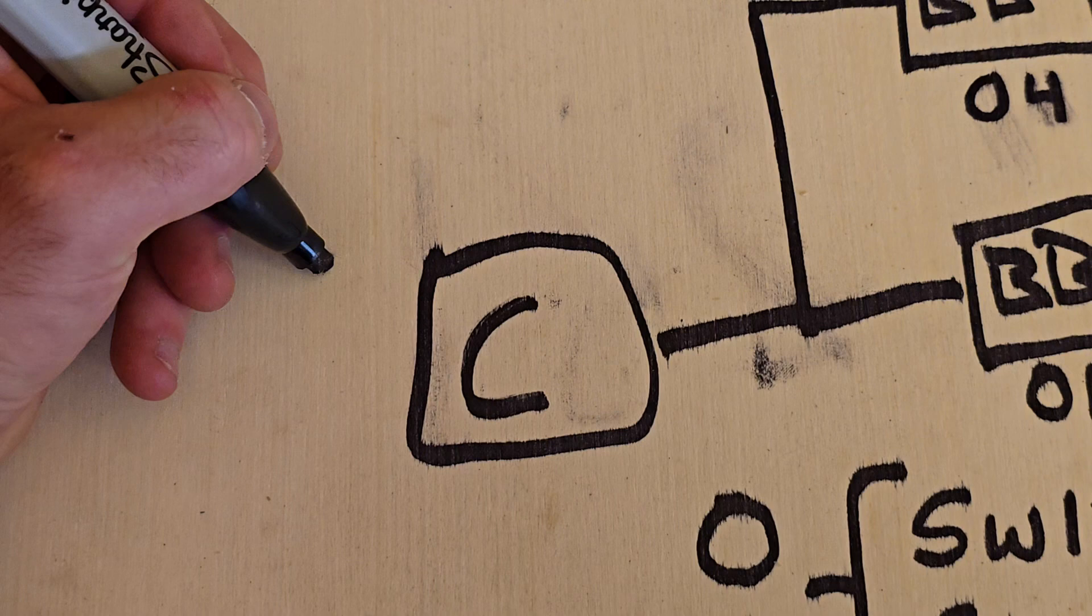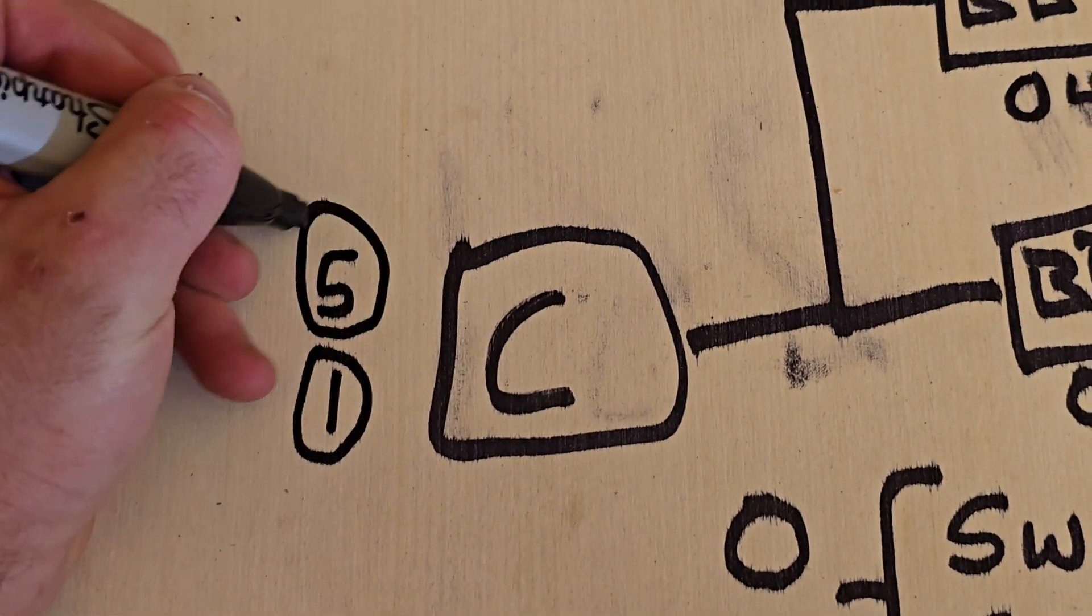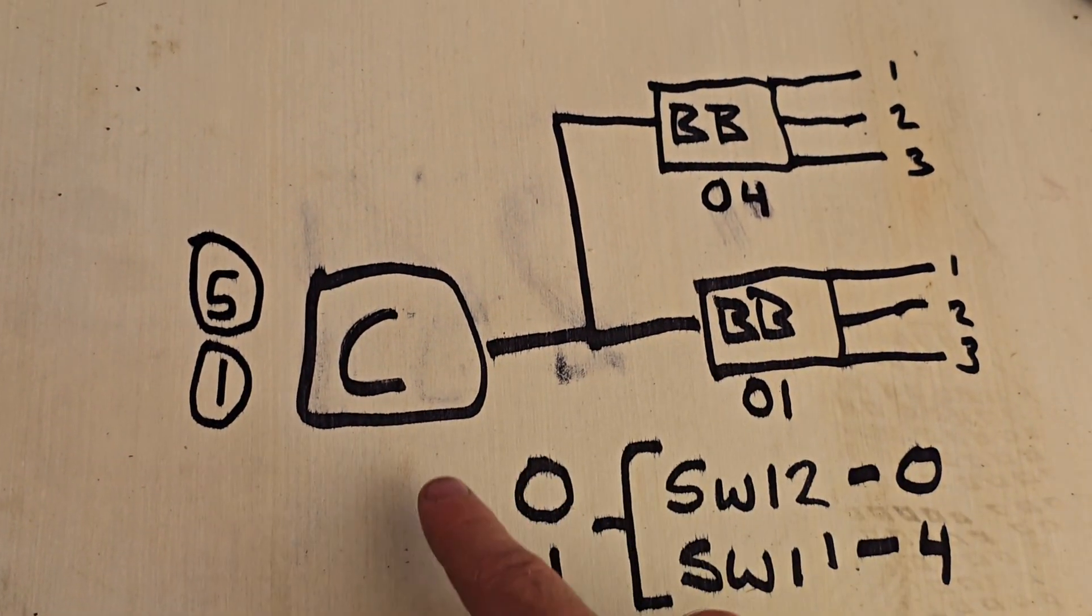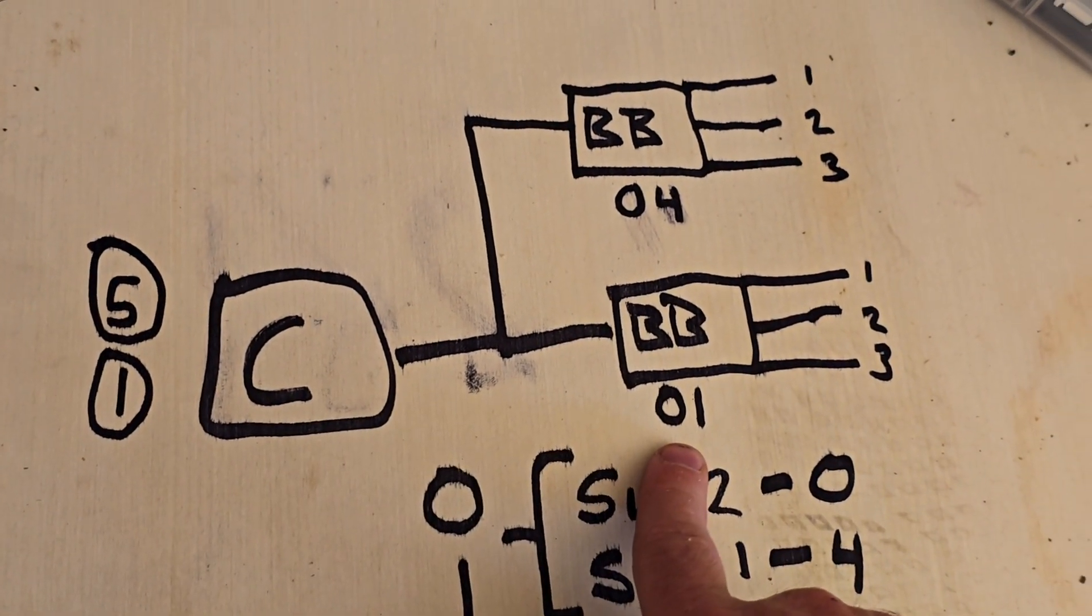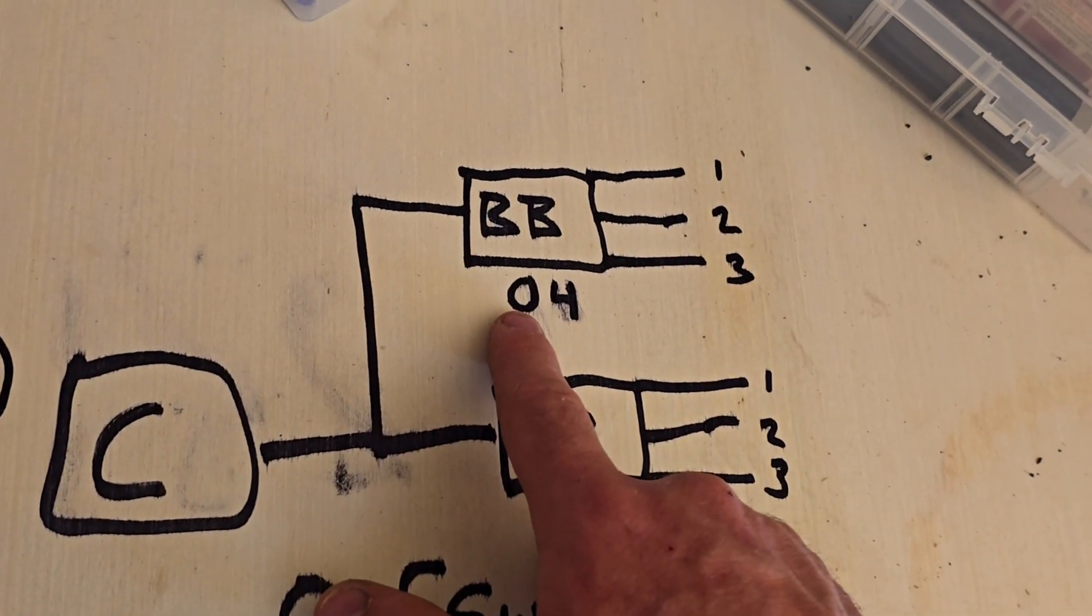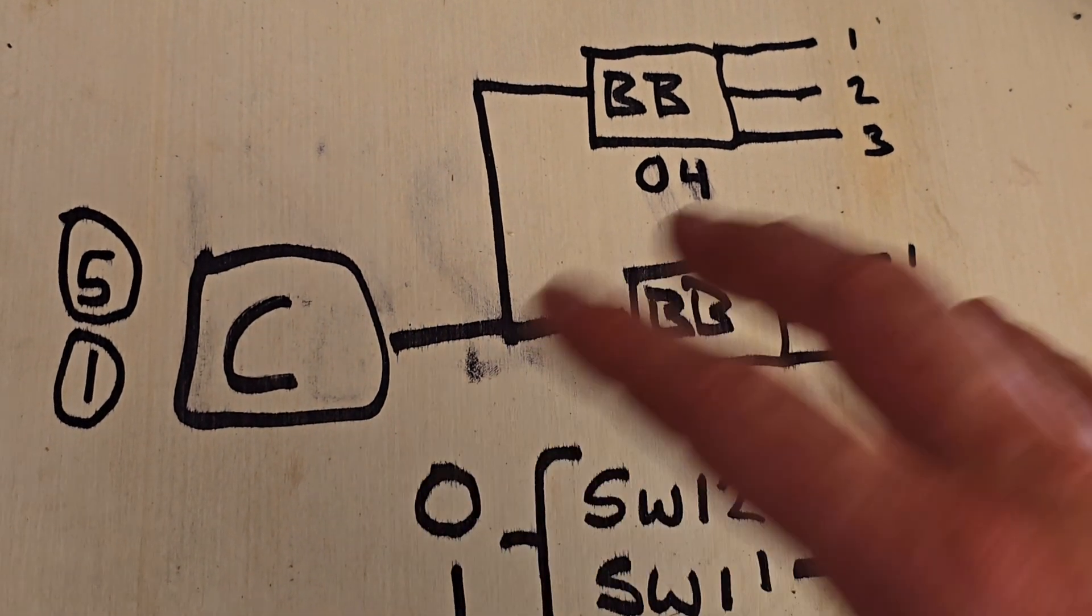And then after you kick on your system, what this is doing is letting the compressor know that we have a branch box down here with three indoor heads and a branch box up here with three indoor heads, so they can communicate with each other and everything will go smoothly.